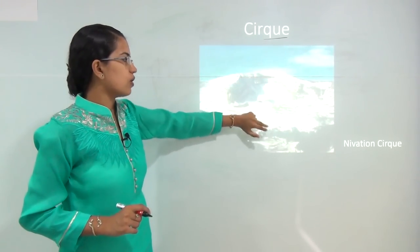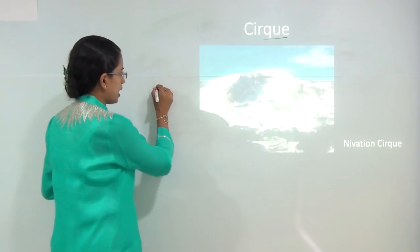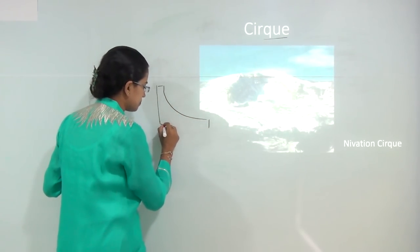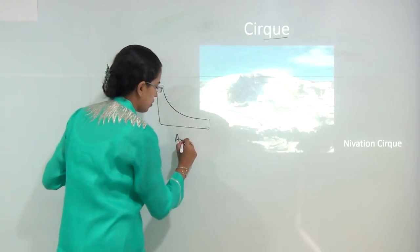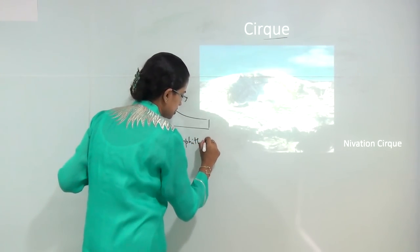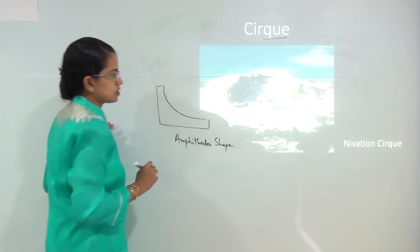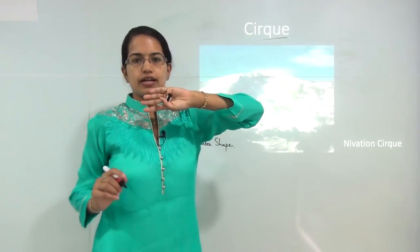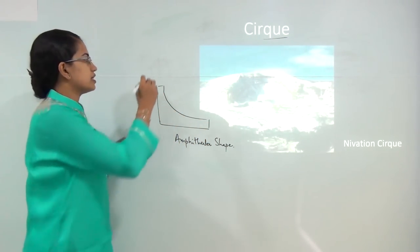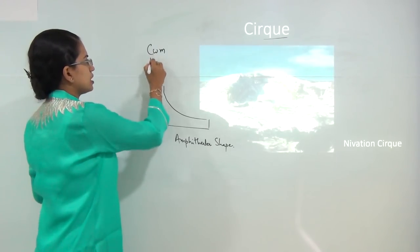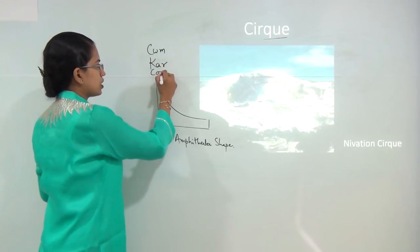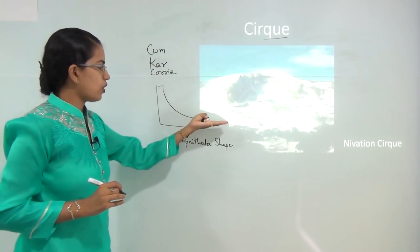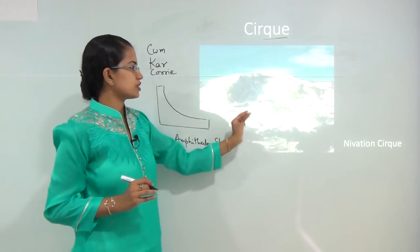The cirque is formed when a glacier moves along, and if we take a cross section it occurs in a horseshoe shape, also known as an amphitheater shape. Cirques are known by different names in different parts of the world: in Wales it is known as cwm, in Germany it is known as kar, and in Scotland it is known as corrie. It is basically formed by the cutting of rock due to glacier movement.